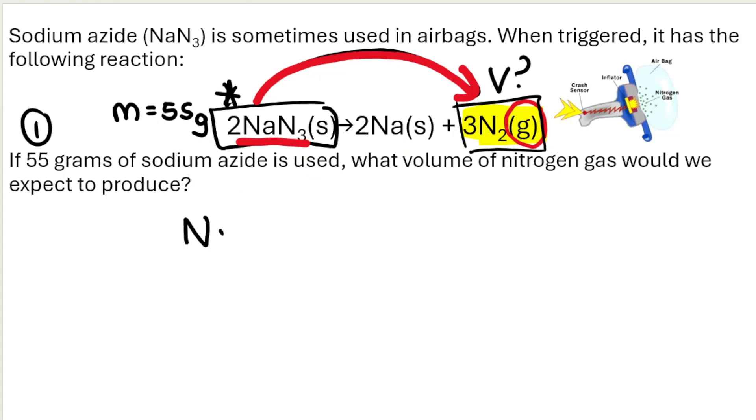So I'm trying to go from NaN3 to nitrogen. The mole ratio, according to the balanced chemical equation, is 2 to 3. So under NaN3, we're going to put a big 2, and under nitrogen, N2, we're going to put a big 3.